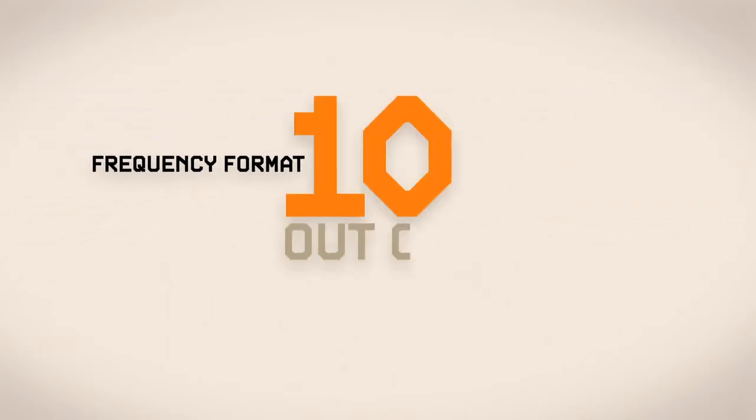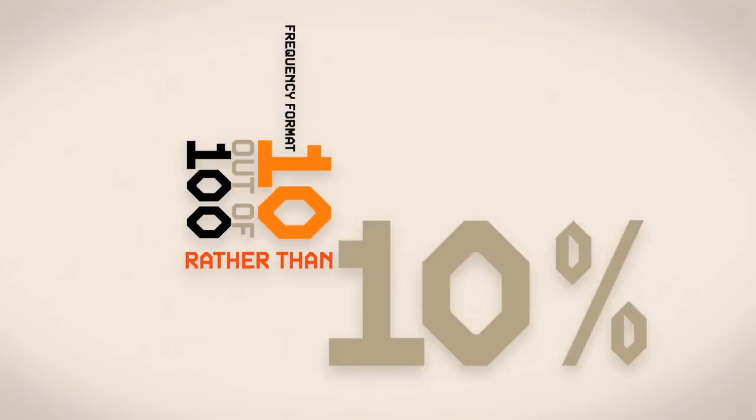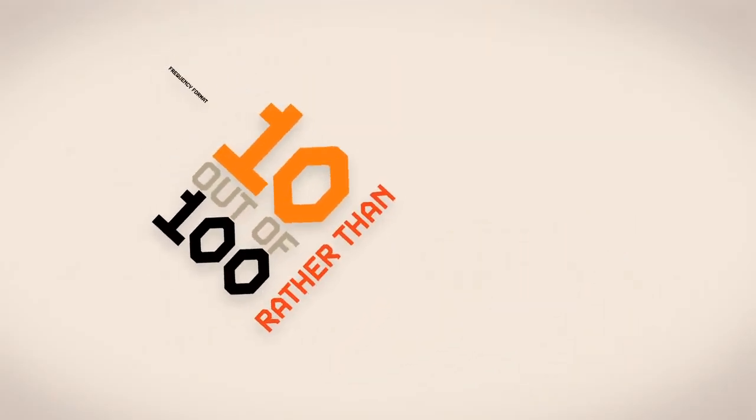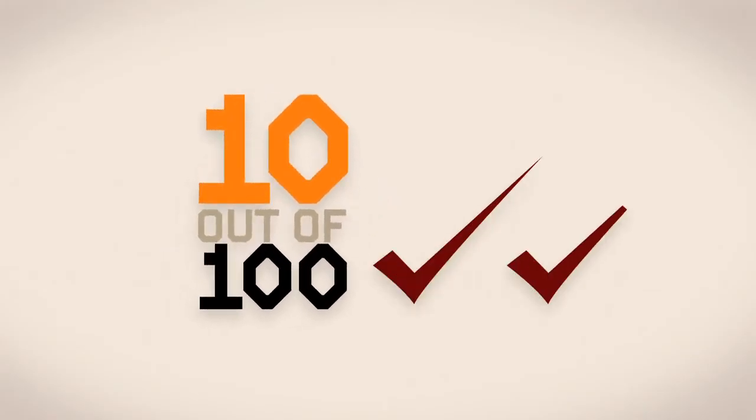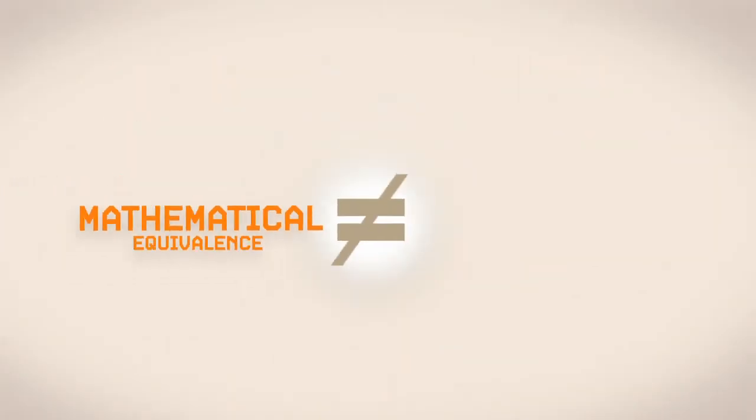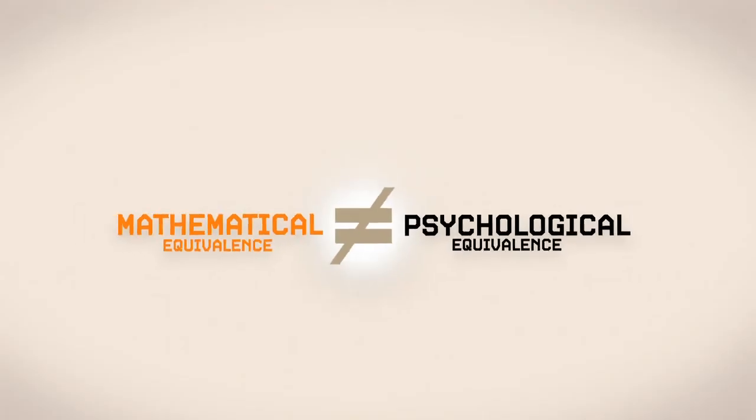There's lots of research showing that people find it easier to reason with numbers if they're put into what's called a frequency format. If I describe something as 10 out of 100 rather than 10%, that 10 out of 100 seems to lead to more concrete images. Climate scientists are obviously going to be typically much more adept with the facts and figures they're using than the audience they're talking to. Having some knowledge about the fact that mathematical equivalence is not the same as psychological equivalence is important.